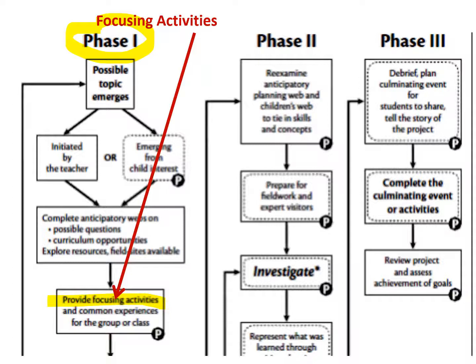In phase one, that's when the project topic emerges. It can be initiated by the teacher or from the children's interests as the teacher observes. Where you see a P on this planning chart, that's where parents can be involved — opportunities for parental involvement. So once a project topic emerges, you complete an anticipatory web as the teacher and with children. You want to explore what are some things the teacher anticipates could be learned, what are the curriculum opportunities, what are the resources available, and then plan some focusing activities and common experiences for the group.